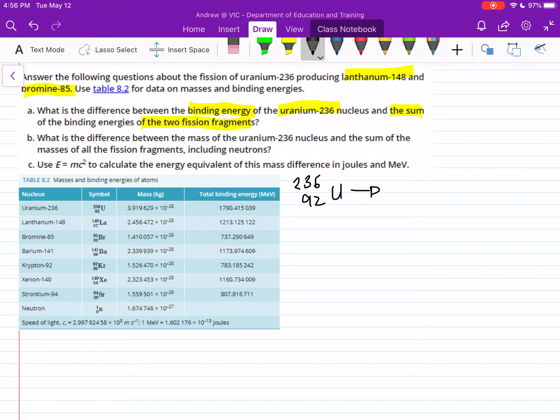It's getting split into our lanthanum, which is 148, the mass number, and then 57La, and it's also getting put into bromine, which was the 85. Just use your table of values here. Bromine-85, so 35Br.